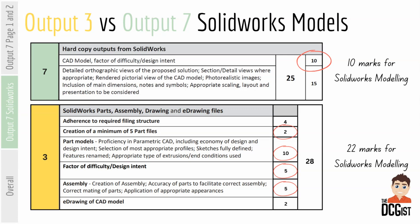This is a really important point because it's a question I get asked a lot — what's the difference between your SOLIDWORKS model in output 3 versus output 7? The first thing is that output 3 models are generally going to be parts and assemblies, and output 7 is going to be one single part with solid bodies inside it. But the bigger thing is the amount of marks that go for each one, and therefore the amount of time each one should take. In output 7 there are 10 marks altogether going for your CAD model — your CAD model and your factor of difficulty or design intent.